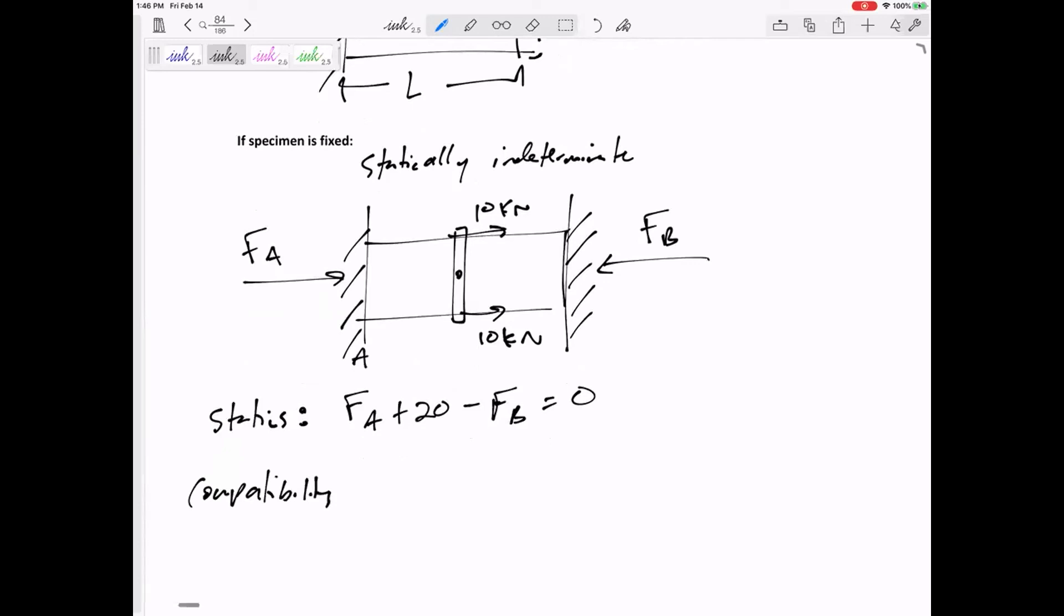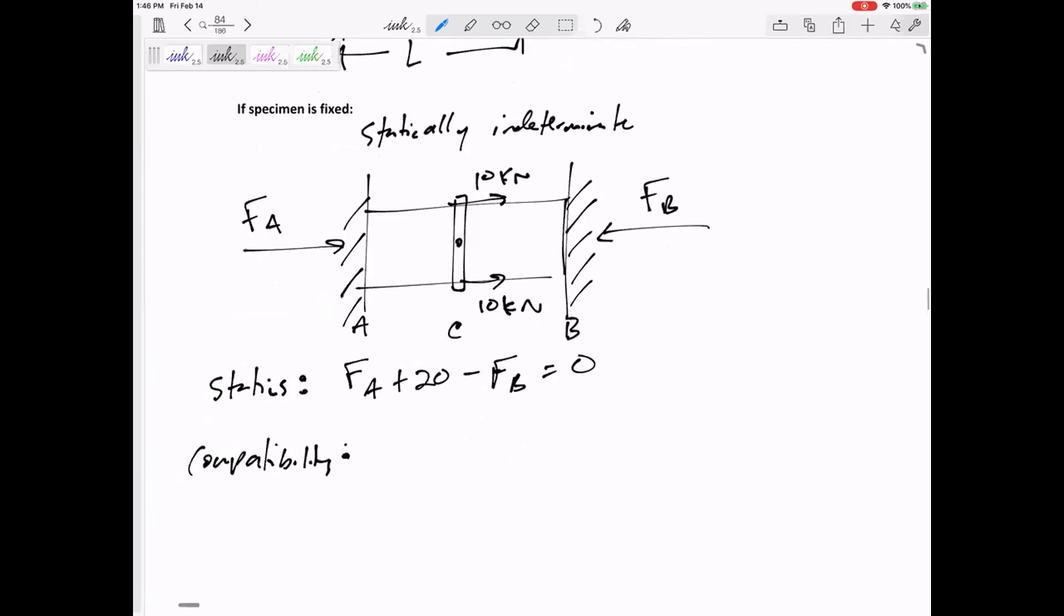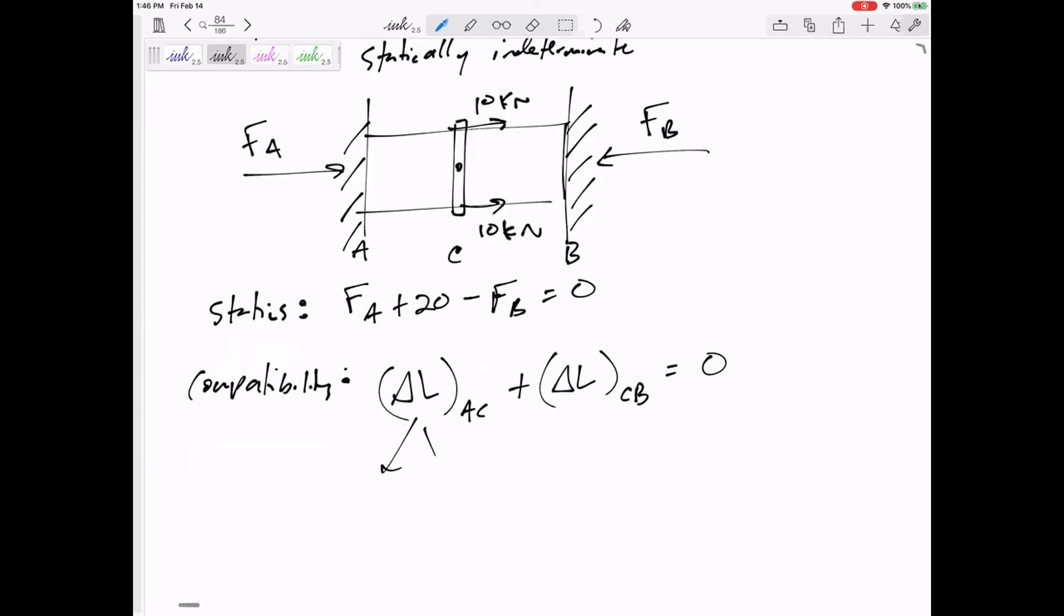Let's call this ABC. What would our compatibility equation be? The delta L of section AC plus delta L of section CB—I think it adds up to zero if they're fixed between two walls. We just need to be careful. Now, if there's a temperature change, that delta L has two parts, or it has two things that are adding up to the delta L: still FL over EA, and now alpha delta TL.